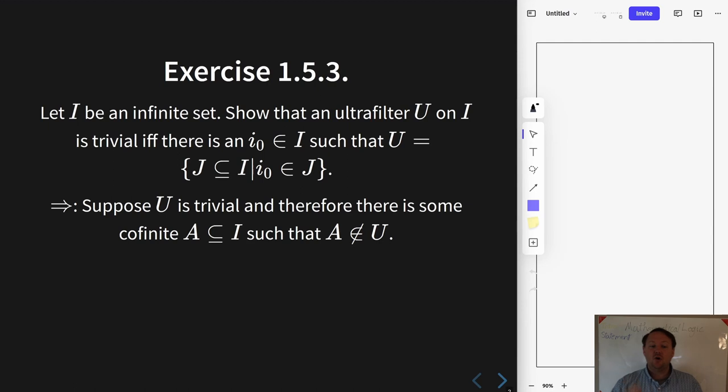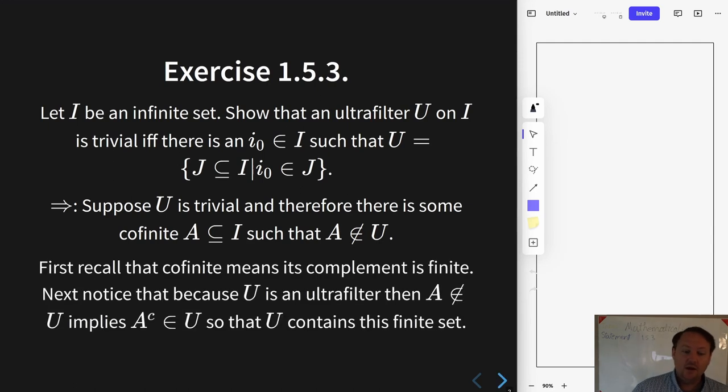That means there is some co-finite set that it does not contain. Now what does co-finite mean? Co-finite means that its complement is finite. Moreover, because U is an ultrafilter and A is not in it, then A complement is in it.